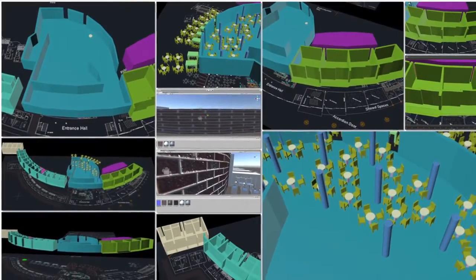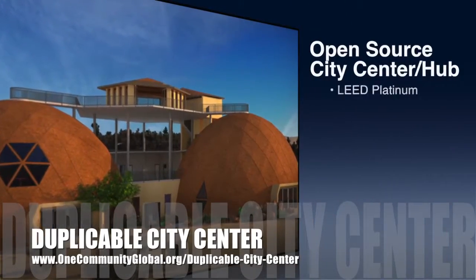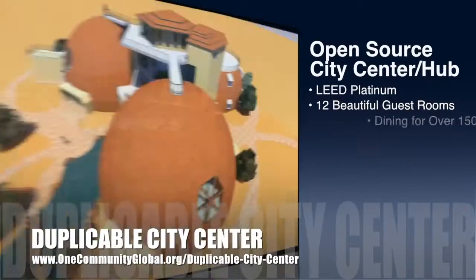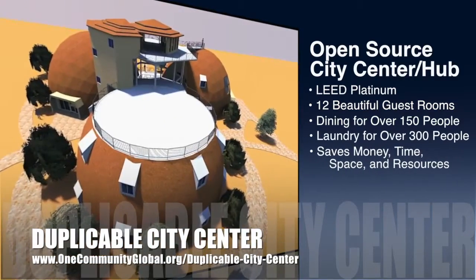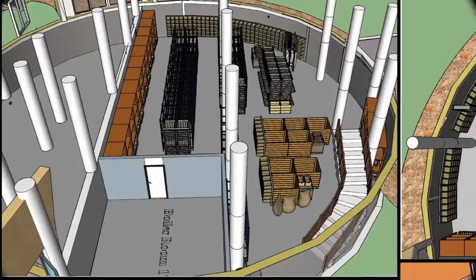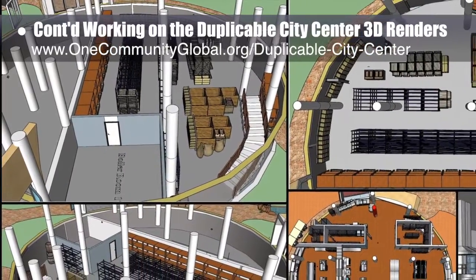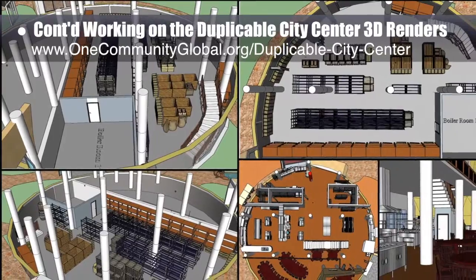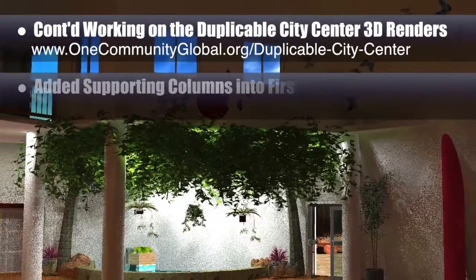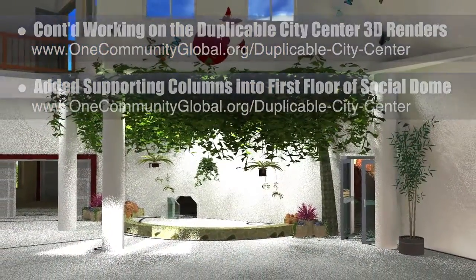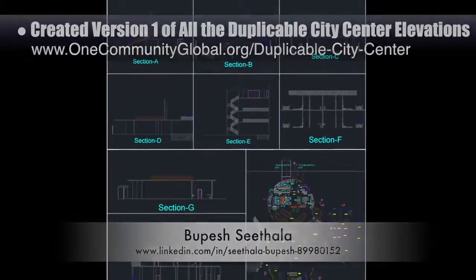One Community is also creating an open source duplicable city center designed to be LEED Platinum certified, provide 12 guest rooms, dining for over 150 people, and laundry and recreation space for over 300 people — all while saving money, time, space, and resources. This week the core team continued working on the duplicable city center 3D renders, including updates to the dining dome basement: relocating the boiler room, correcting the retaining wall location, and rearranging storage shelves and supporting columns. Bupesh Sithala, interior designer and drafter, created version one of all the elevations.